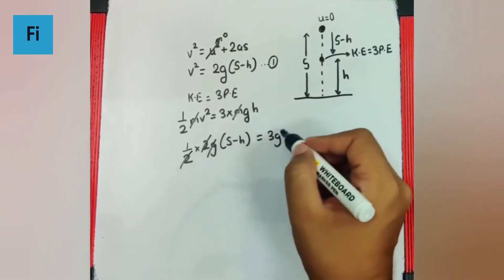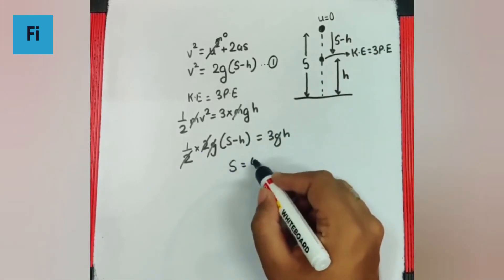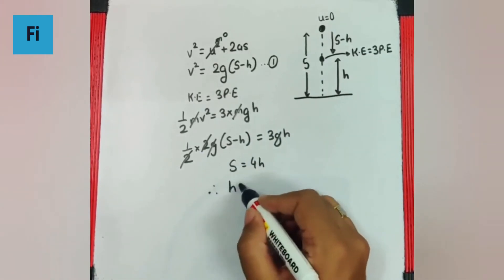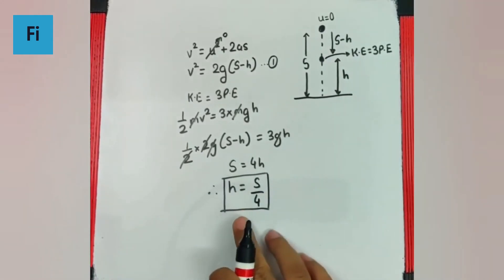So 2 cancel, g cancel, I get s is equal to h plus 3h, 4h which means the height at that instant is going to be s by 4.